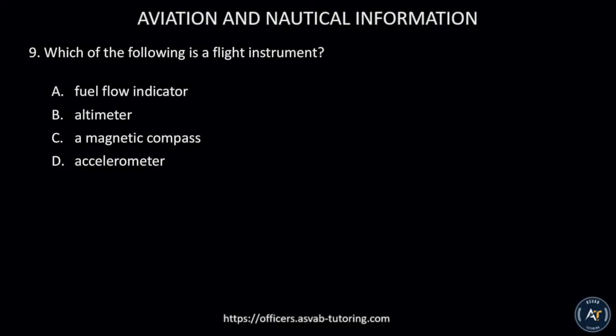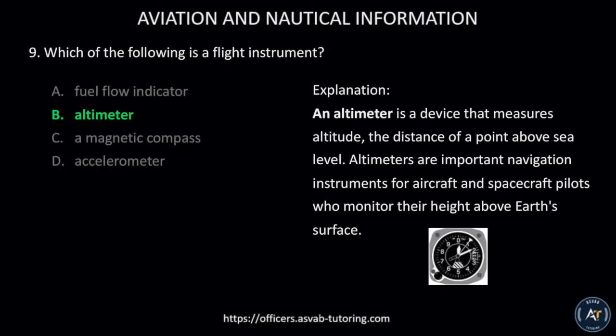Number nine: Which of the following is a flight instrument? A) Fuel flow indicator, B) Altimeter, C) A magnetic compass, or D) Accelerometer. The correct answer is B, altimeter. An altimeter is a device that measures altitude — the distance of a point above sea level. Altimeters are important navigation instruments for aircraft and spacecraft pilots who monitor their height above Earth's surface.